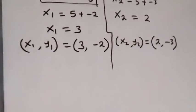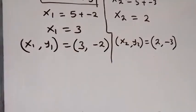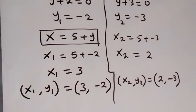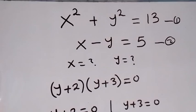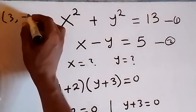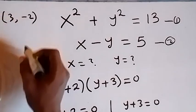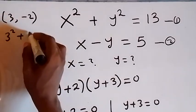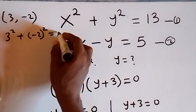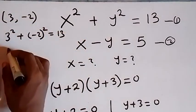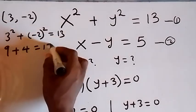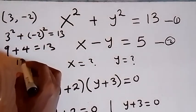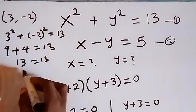So we have these two sets of solutions. Let's check. For the first set, (3, −2), we substitute into equation 1. So x is 3, y is minus 2: we have 3 squared plus (minus 2) squared. Now minus 2 squared is positive, so 9 plus 4, which equals 13. And this equals to 13, so this satisfies the first equation.